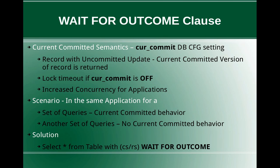The scenario we are going to discuss is: within the same application, for a specific set of queries you want the current committed behavior to be applied, and for another specific set of queries you don't want the current committed behavior to apply. Because current commit is a DB CFG level setting, if you just set it as on it will be enabled for the entire database. So how do you control it for certain sets of queries? The business scenario can be like that.